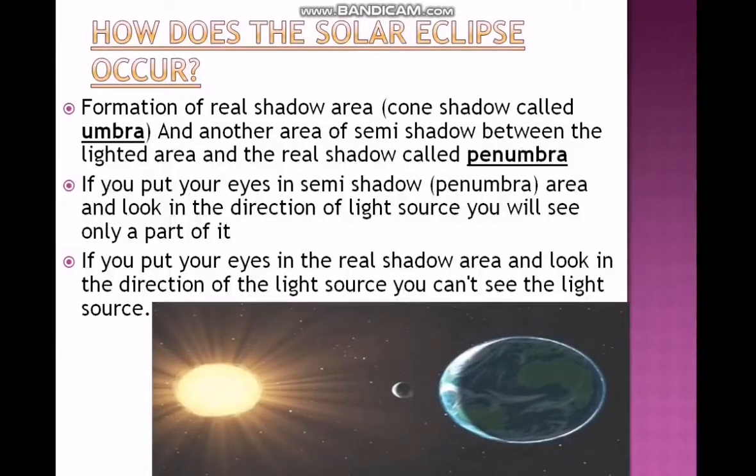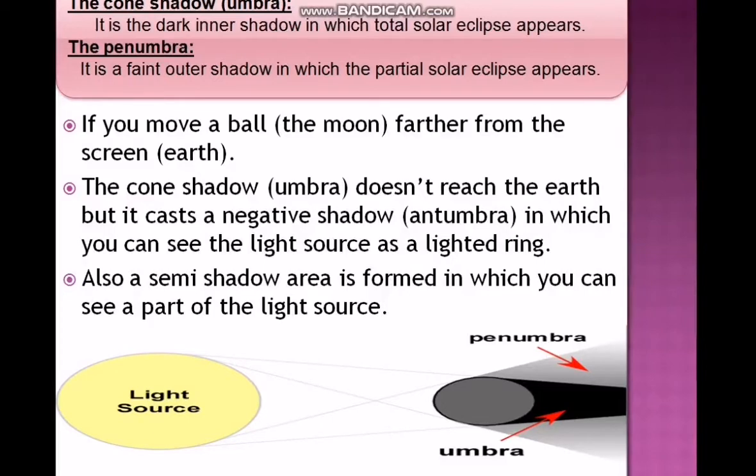If you put your eyes in the real shadow area, or umbra, and look in the direction of the light source, you can't see the light source. The moon's shadow umbra is a dark inner shadow in the total solar eclipse where we can't see the sunlight completely. The penumbra is a faint outer shadow where the partial solar eclipse appears. If you move the moon farther from the Earth, the cone shadow umbra doesn't reach the Earth, but it casts a negative shadow where you can see the light source as a lighted ring.